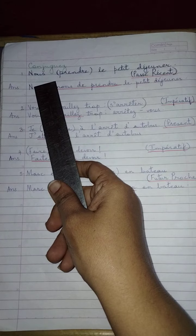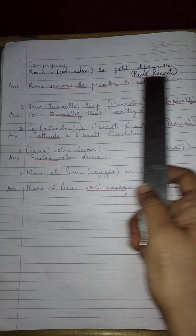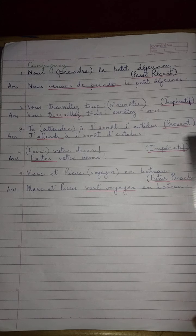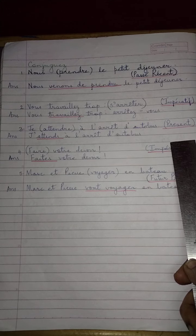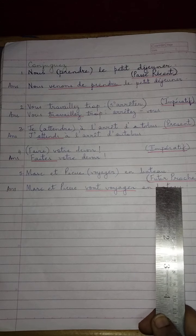Okay children, let us continue with conjugations. So, we have the various tenses that you have learned: the passé récent, you have learned the imperative mood of both reflexive verbs and the normal verbs, you have learned the present tense, again imperative, you have learned both reflexive and the normal verbs, and you have learned the futur proche.